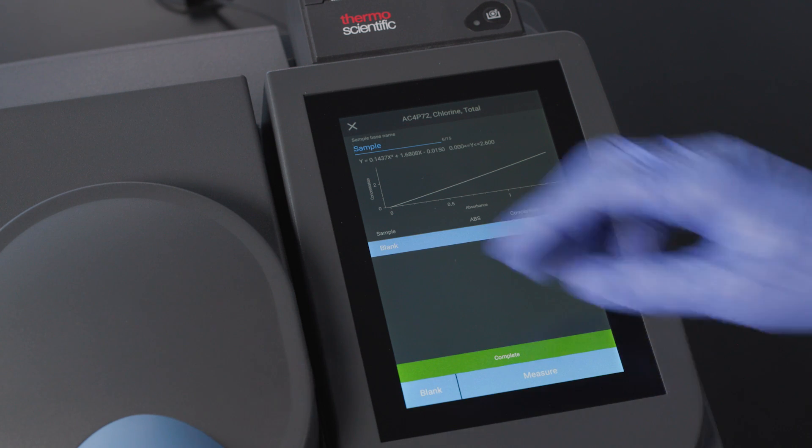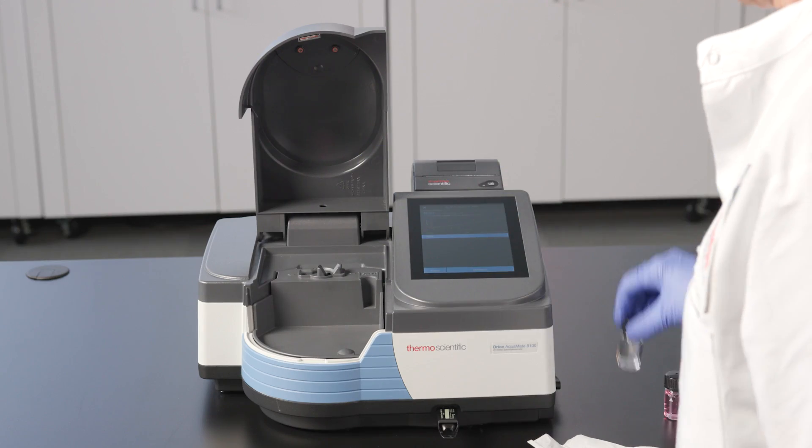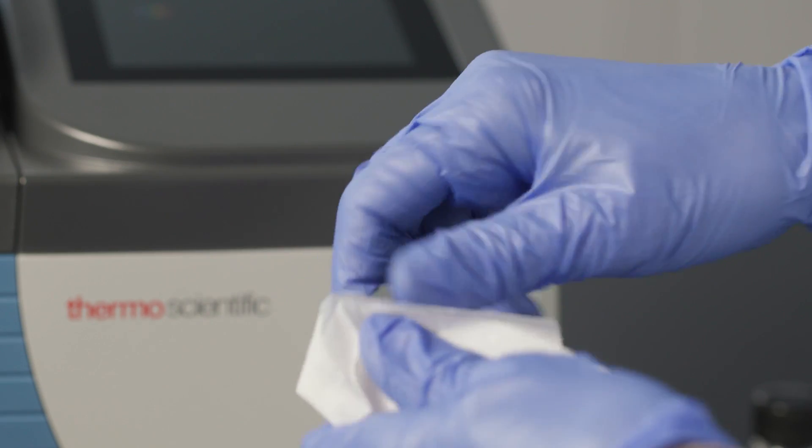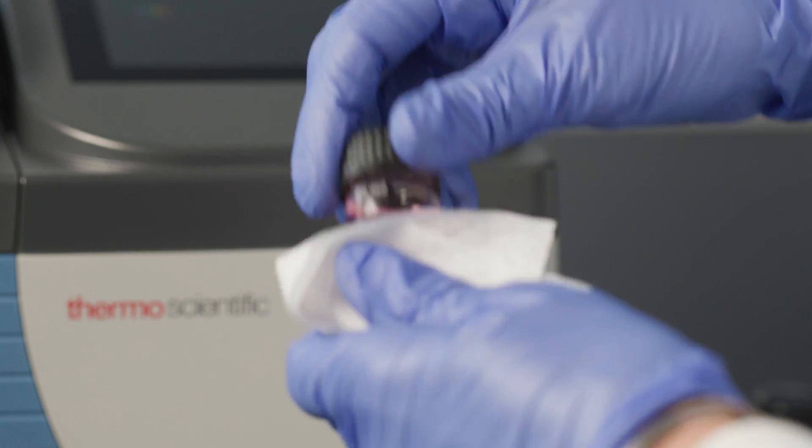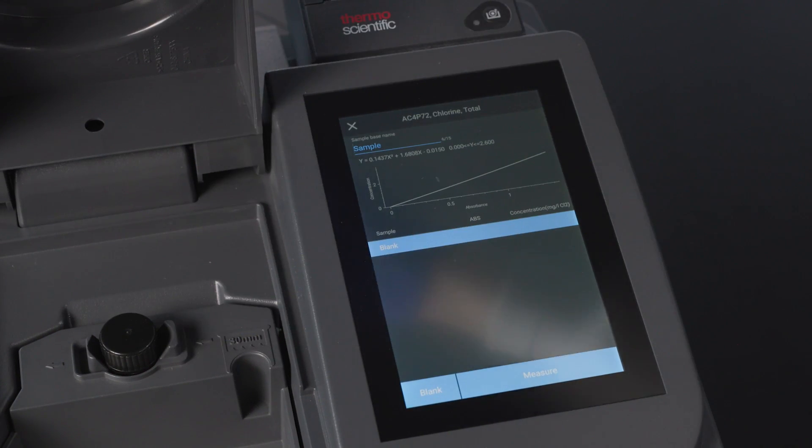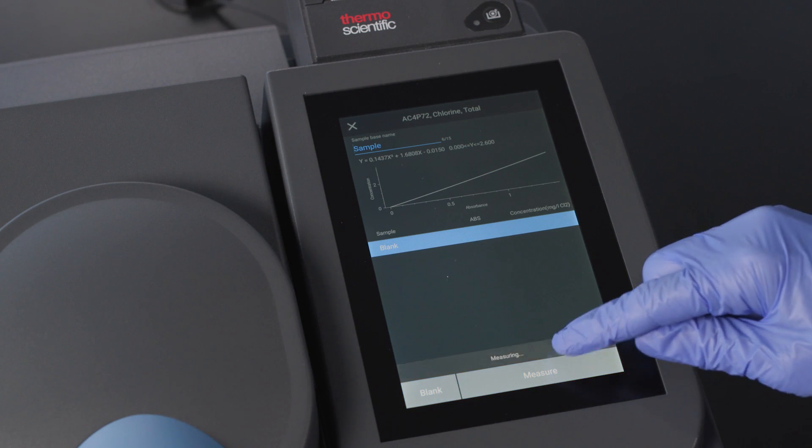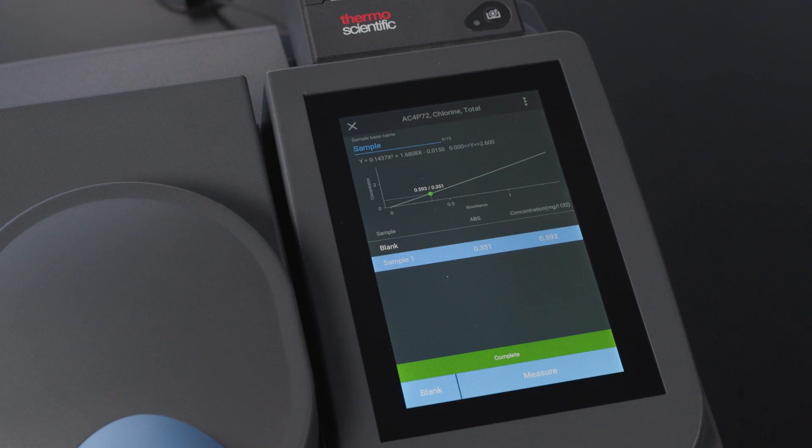Now we can move to the measurements. We take out the blank and insert our first sample. We can enter the sample number here if we want, or the meter will assign sequential sample numbers. Then we simply select Measure, and the Aquamate spectrophotometer will tell us how much chlorine is in the sample.